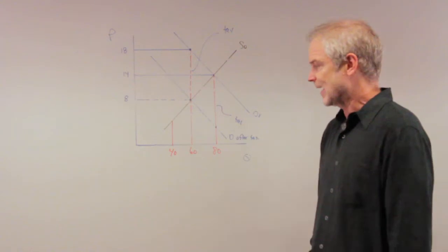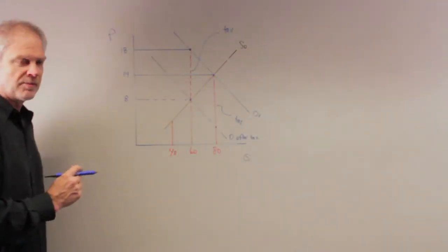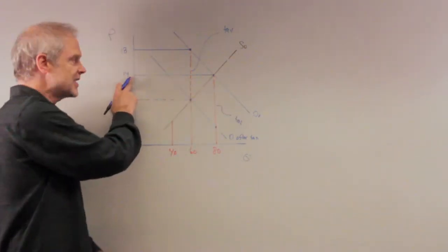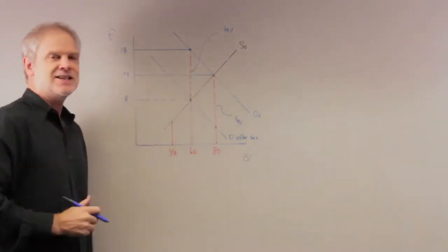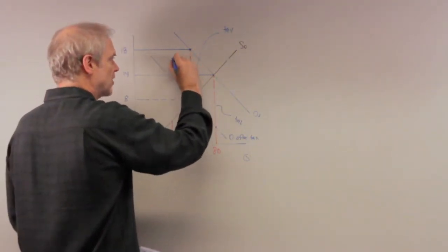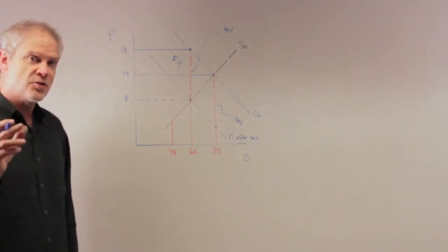So how do you figure that out? Well, again, you always compare things to the initial equilibrium. If consumers were paying $14 before the tax, we now know they're paying $18 after the tax. So this part of the tax, this $4, is the increase in price experienced by consumers. Their burden is $4.